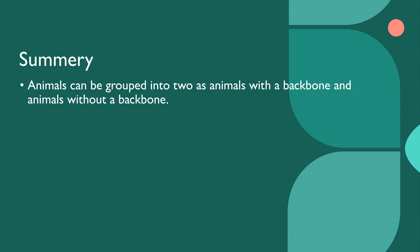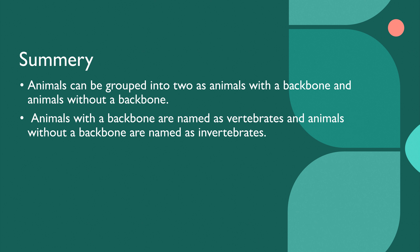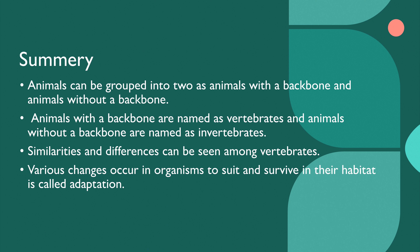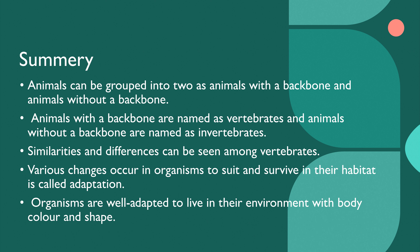Here is the summary of the lesson. We divided animals into two main groups — vertebrates and invertebrates — according to the presence or absence of a backbone. Animals with a backbone are vertebrates; animals without a backbone are invertebrates. Both groups show adaptations to their living environment, which is important to maintain existence, find food, and protect from predators. Body shape and body colour are mainly involved in maintaining these adaptations.